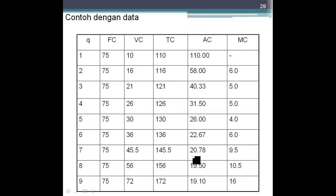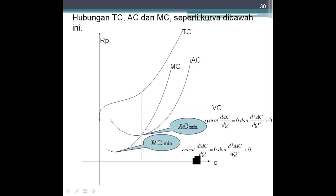Ini contoh untuk data Q, fixed cost, variable cost, total cost, average cost, dan marginal cost. Semakin berkurang. Hubungan total cost, average cost, dan marginal cost.